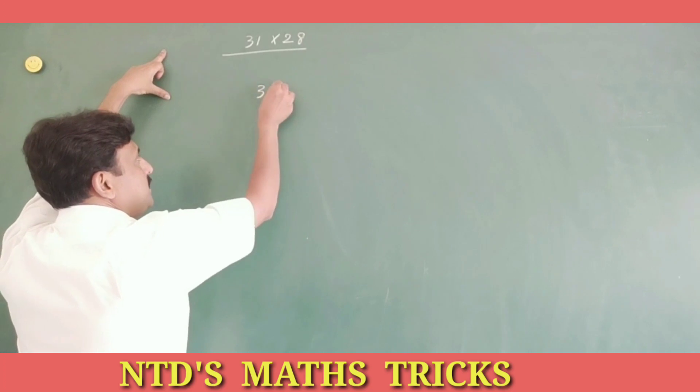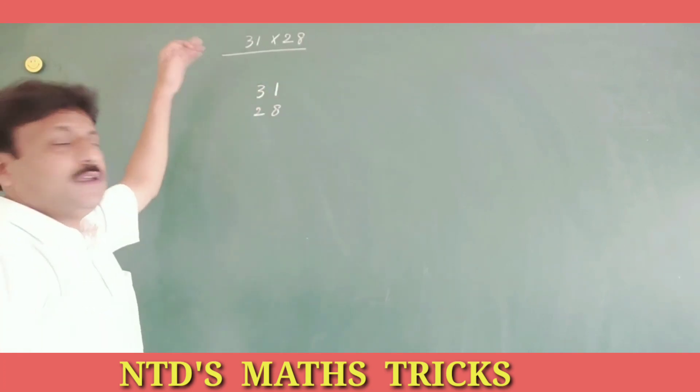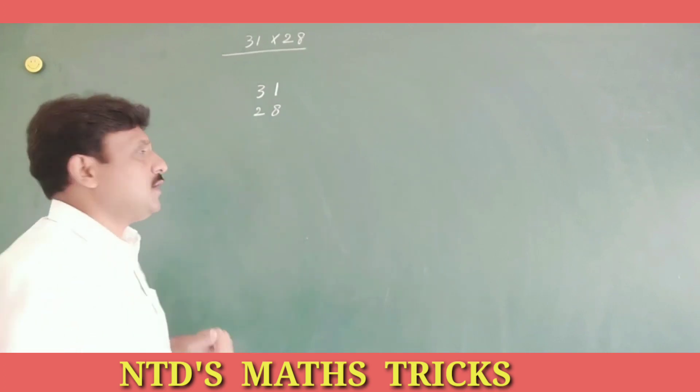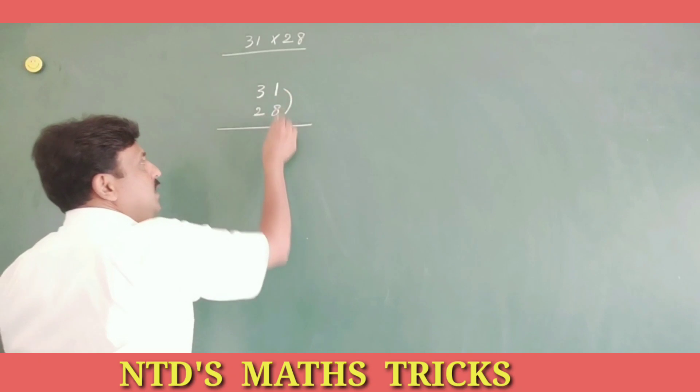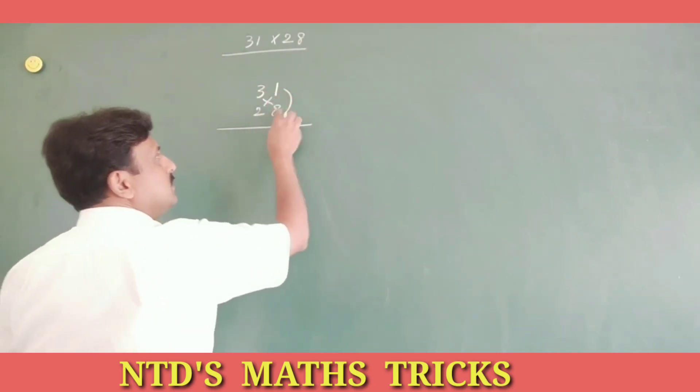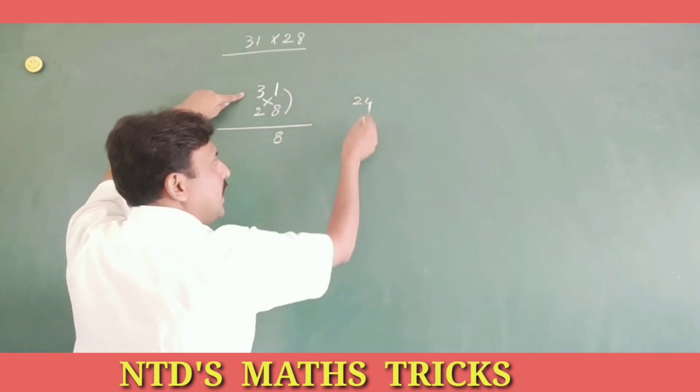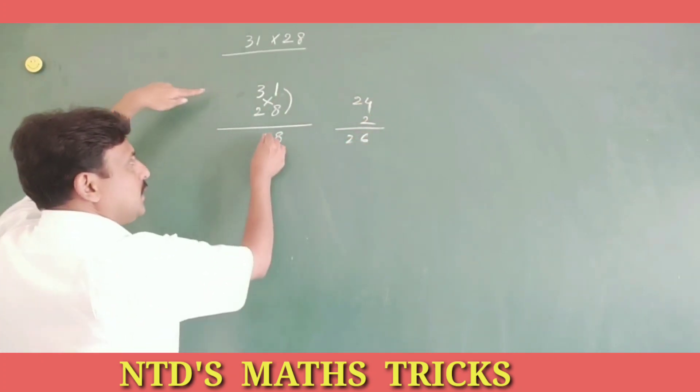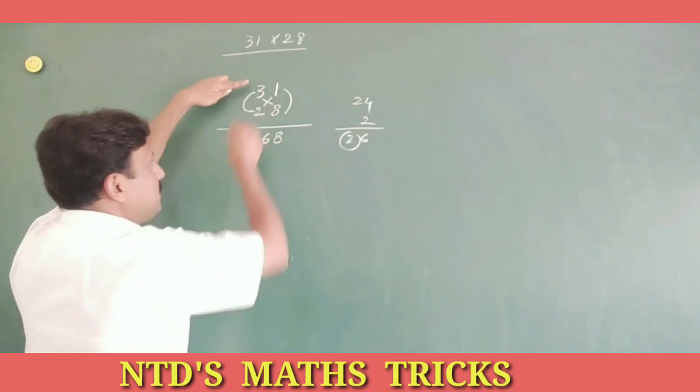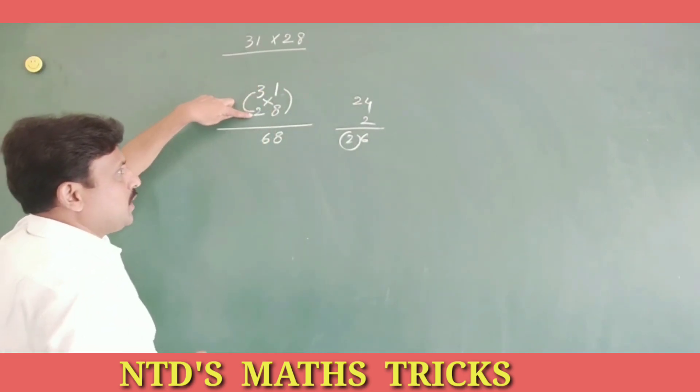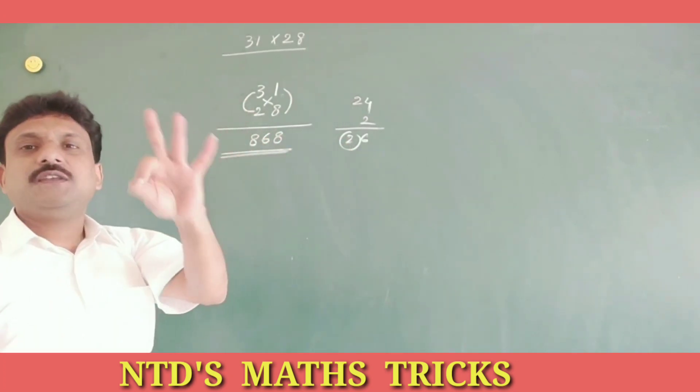31 into 28. Now multiply unit place numbers. 8 ones are 8, then cross multiply 3, 8s are 24, 2 ones are 2, and this becomes 26. Write 6, 2 carry. Multiply 10 plus number, 3 twos are 6, 6 plus 2, 8. That is 868.